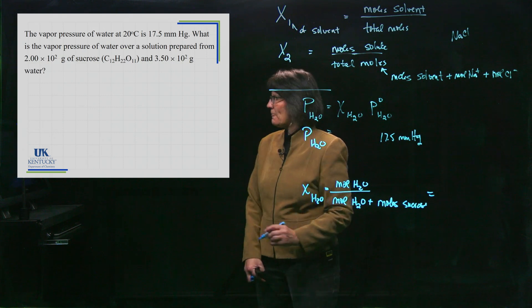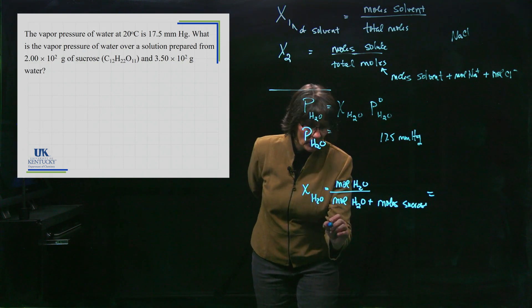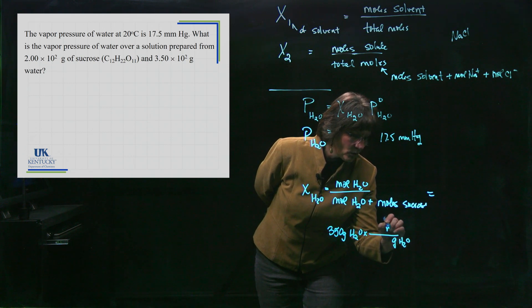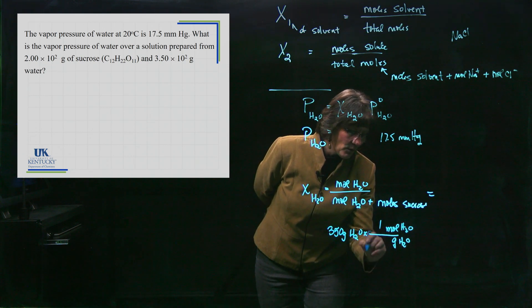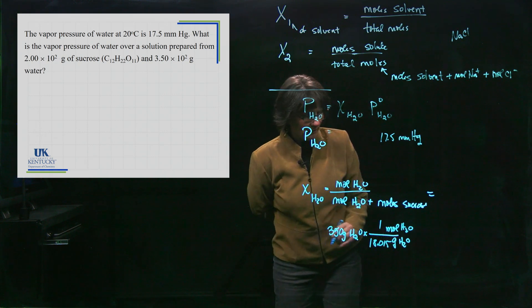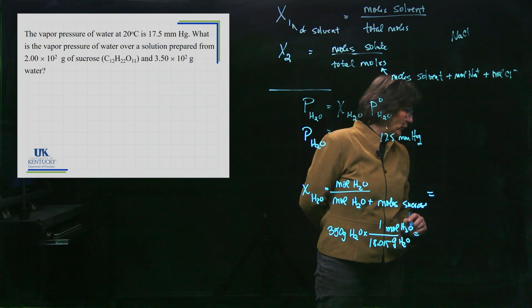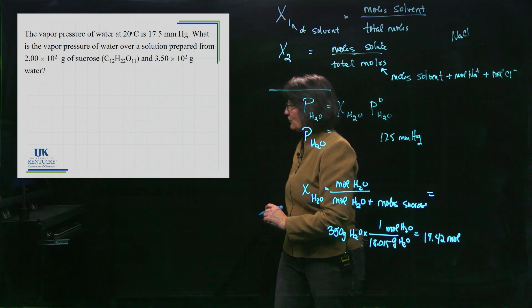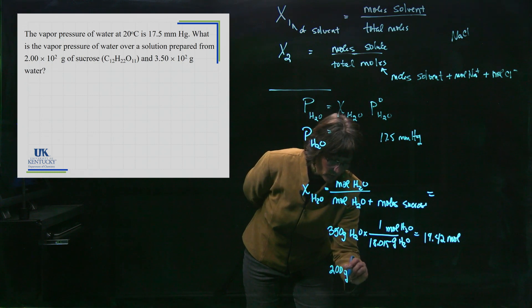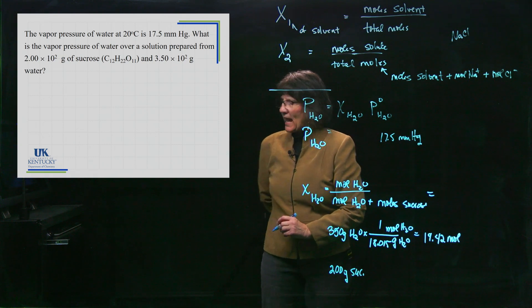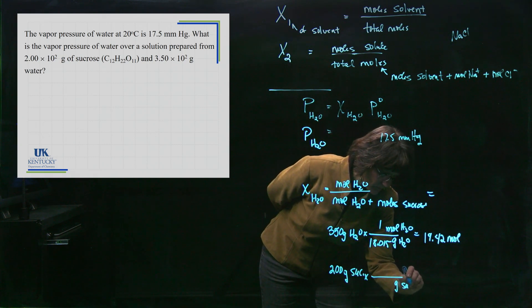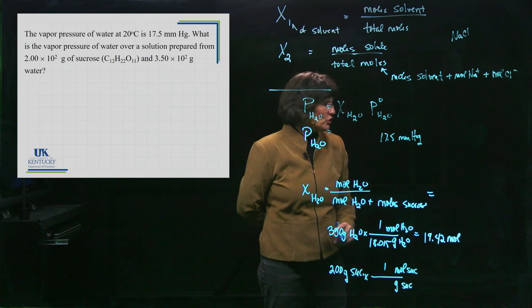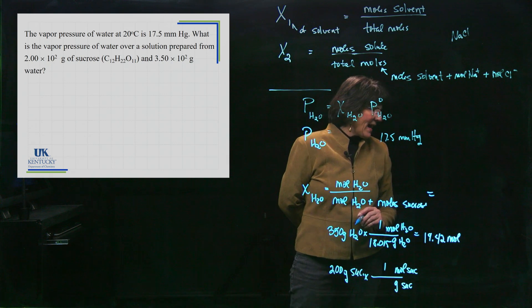The mole fraction of water equals moles of water over moles of water plus moles of sucrose — since sucrose is a non-electrolyte, it doesn't break apart. For the water, I have 350 grams. Converting: 350 g ÷ 18.015 g/mol gives 19.42 moles of water. For the sucrose, I have 200 grams. Sucrose is C₁₂H₂₂O₁₁ with a molar mass of 342.34 g/mol. Dividing gives 0.5842 moles of sucrose.